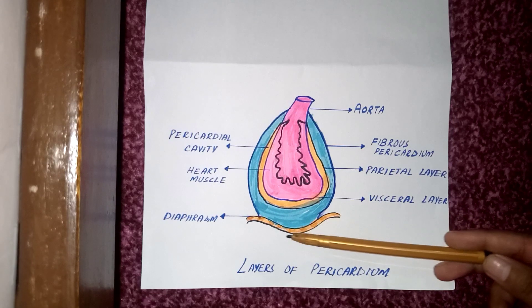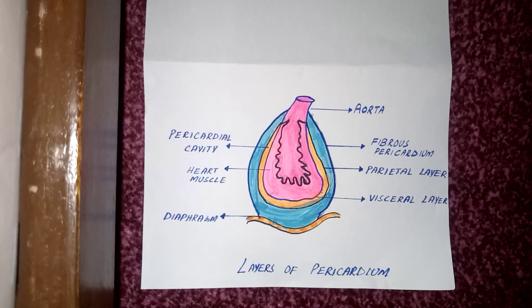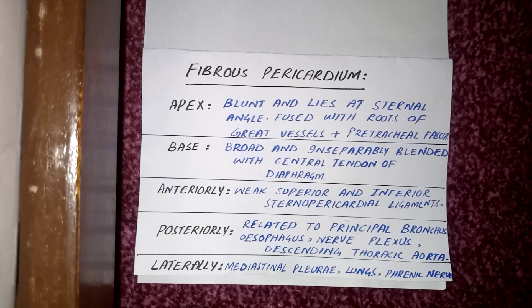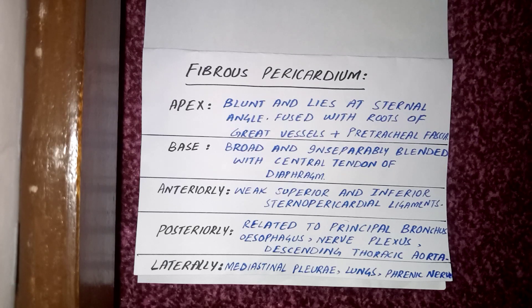The fibrous pericardium lies on the diaphragm below. As its name shows, it is made up of fibrous tissue. It has an apex, base, anterior and posterior surfaces, and lateral sides. The apex of the fibrous pericardium is blunt and lies at the sternal angle. It is fused with the roots of the great vessels and with the pre-tracheal fascia.